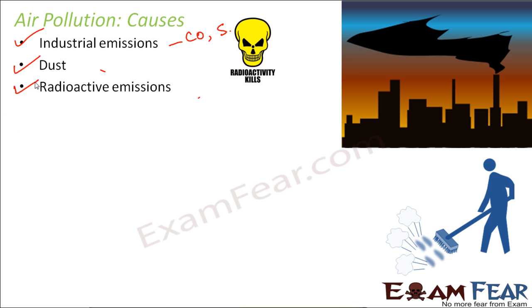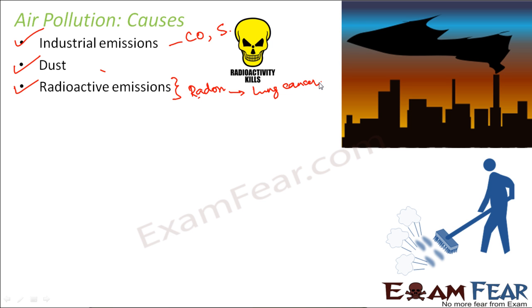Radioactive emissions are also a cause of air pollution — these are radiations which come out of radioactive decay. Certain elements are capable of producing these special types of radiations. One example is radon, which is capable of producing radioactive emissions and is extremely poisonous — so poisonous that it can cause lung cancer, which is a deadly disease.